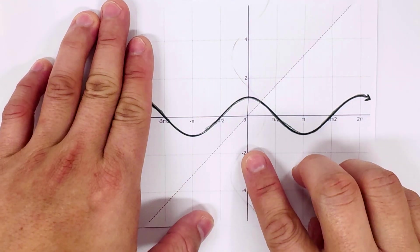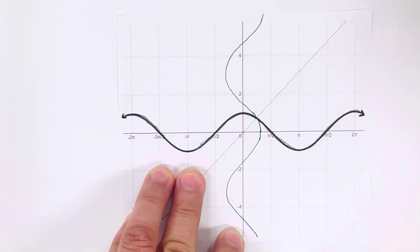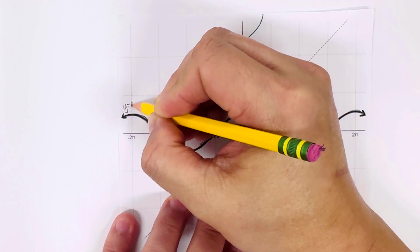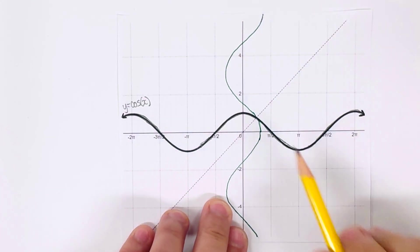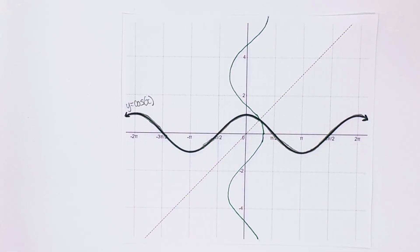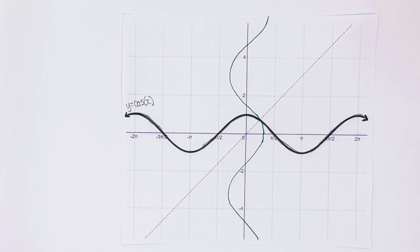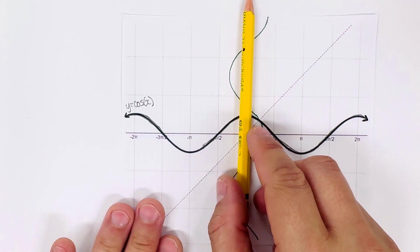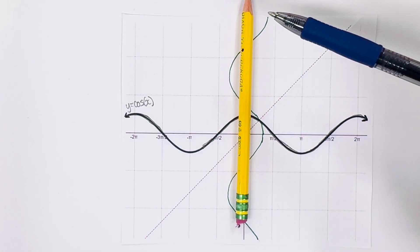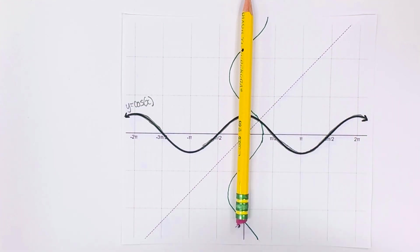I'm going to trace this reflected graph. This is the inverse graph of y equals cosine x. If you notice, this inverse graph in green is not a function — it fails the vertical line test. If I put a pencil here, the green graph is touching it four times, so it fails the vertical line test.